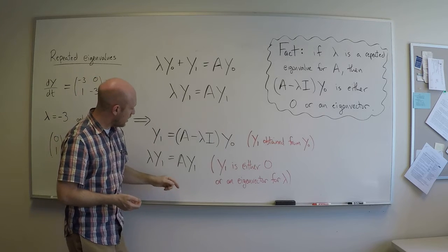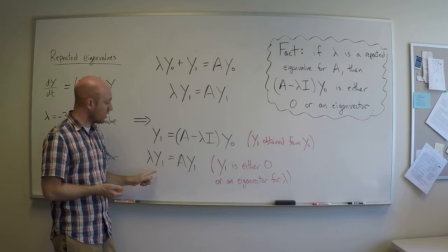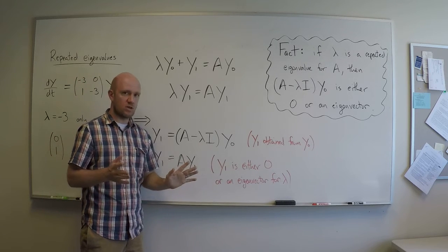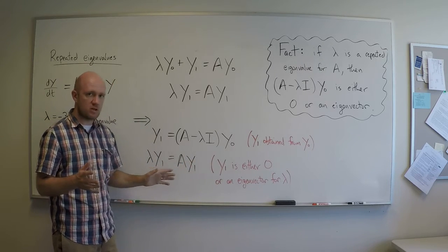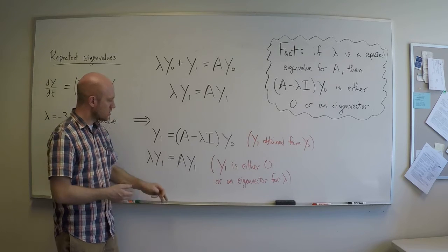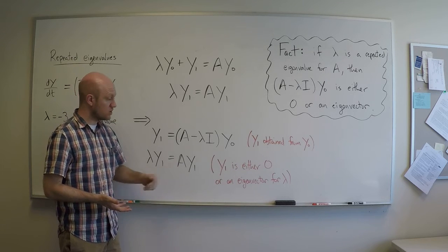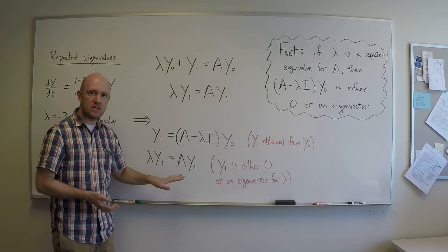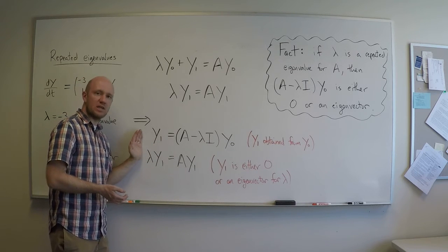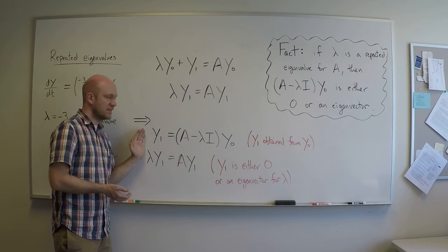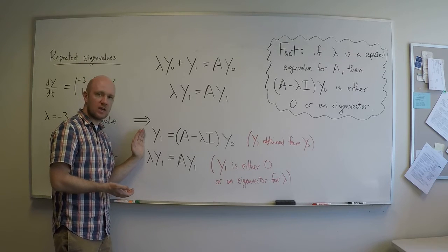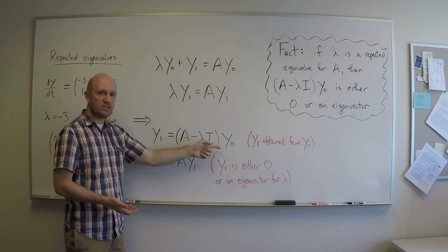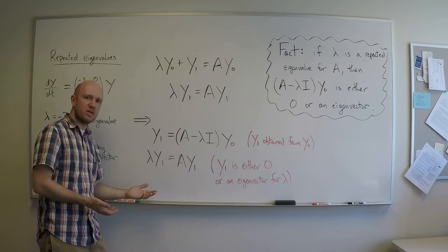What's the second one? Well, the second one just says that y1 is an eigenvector for lambda, or y1 is 0. There's nothing that says y1 can't be 0. I don't allow 0 eigenvectors, so y1 needs to be either 0 or an eigenvector for lambda. Now, there's a little piece of theory here that tells us that these two conditions are, in fact, not separate conditions.